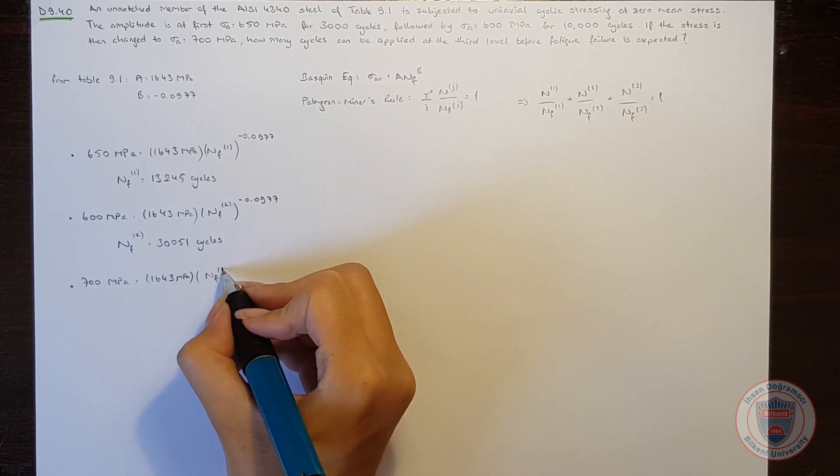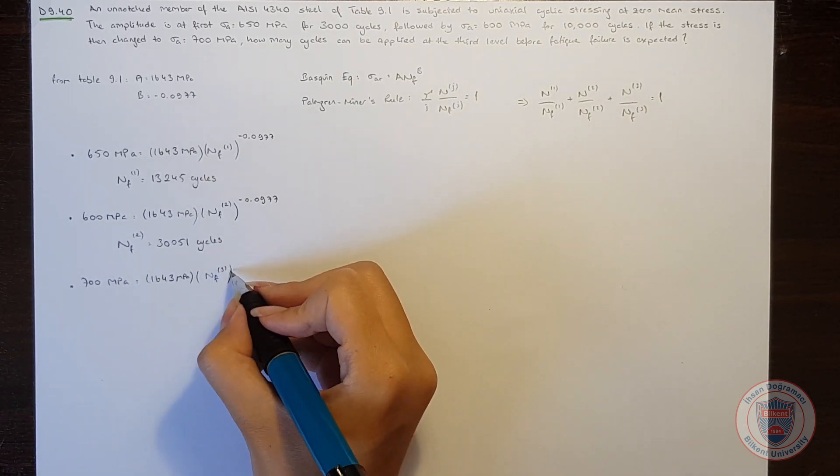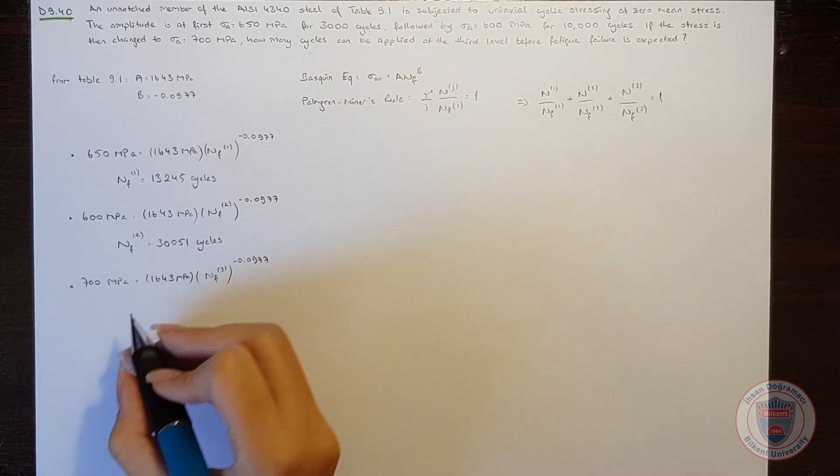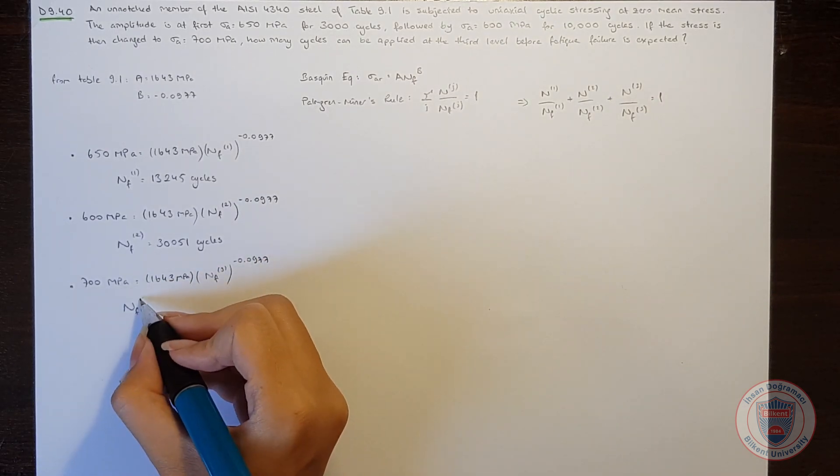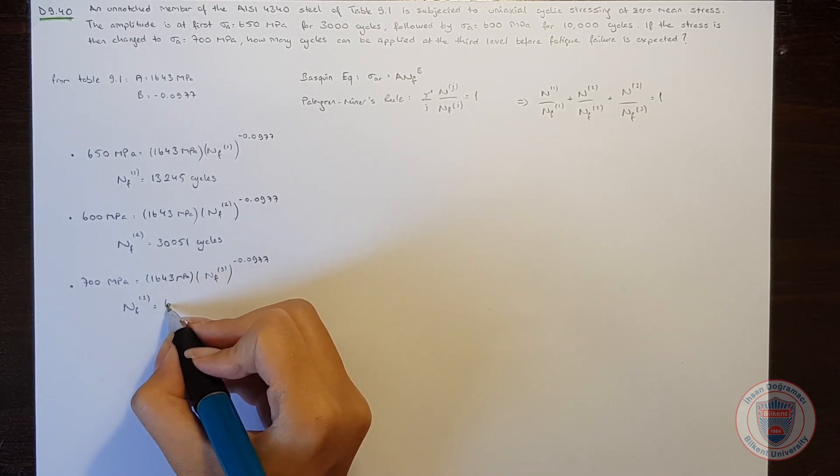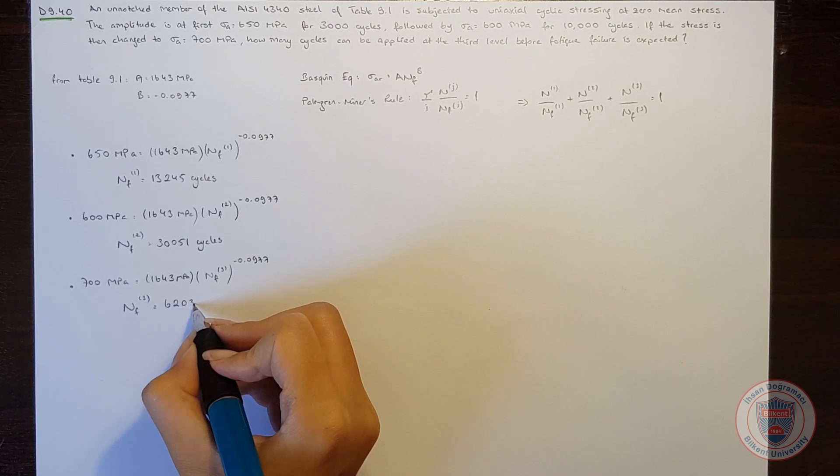We will get the fatigue life at the third level to the power of again b, and then we will obtain nf at the third level as 6203 cycles.